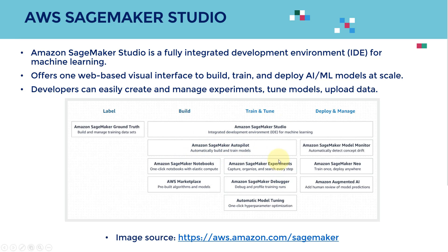Within Amazon SageMaker Studio, you will also be able to manage experiments, which is a very important feature. You'll also be able to tune the model and kick off a hyperparameter tuning job as well.